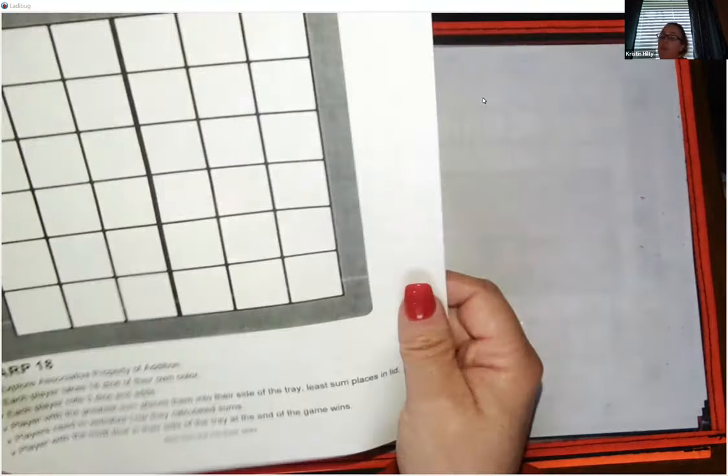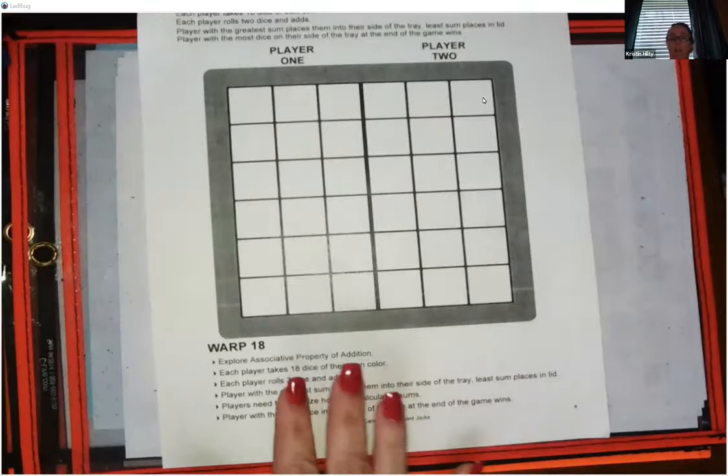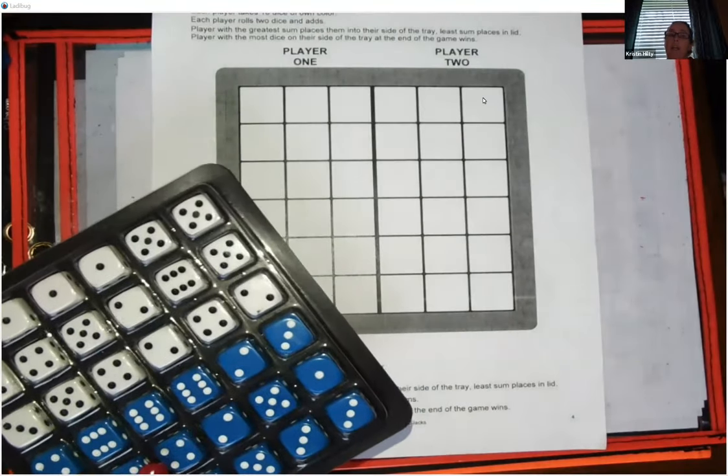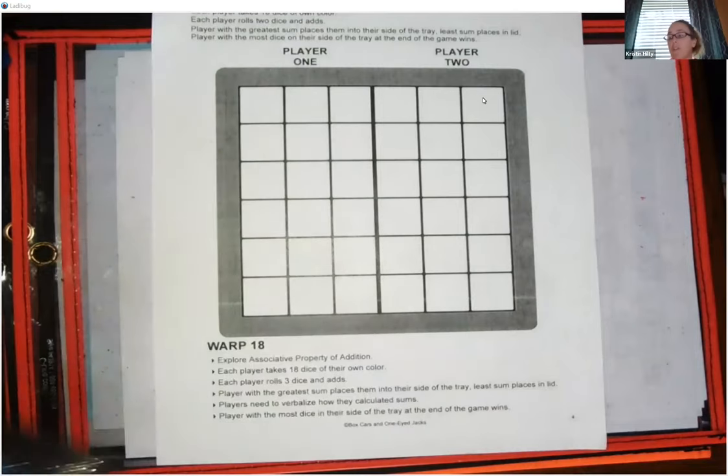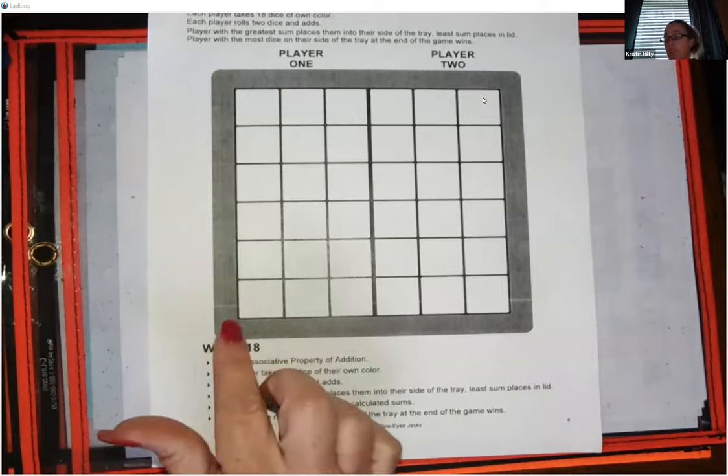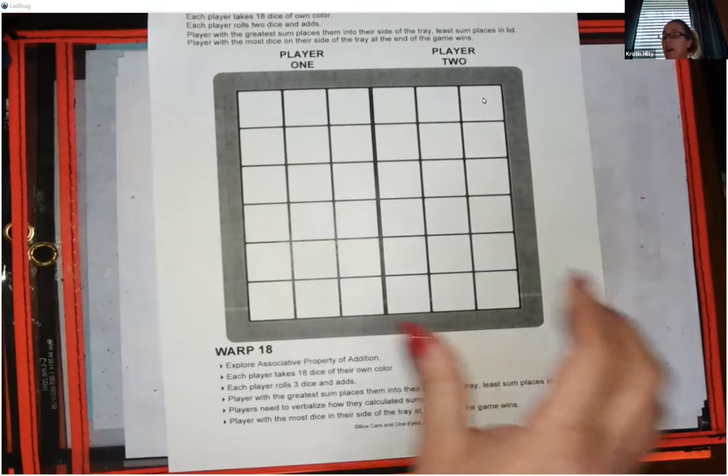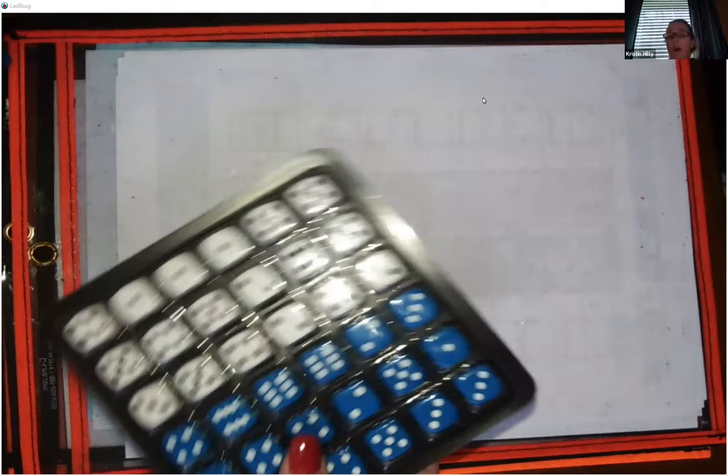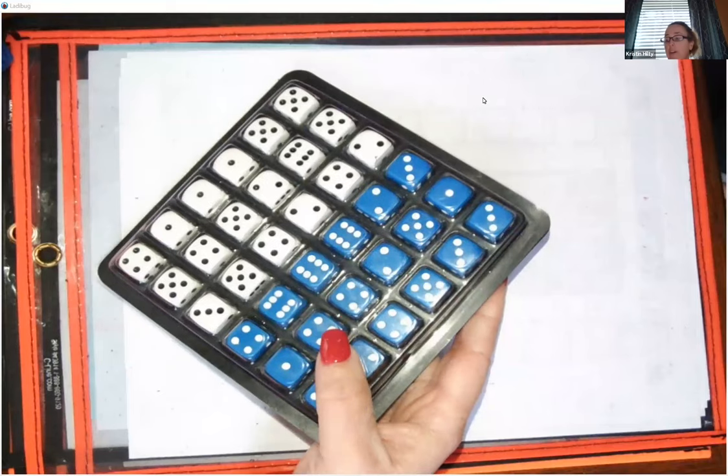the game board for Horse Race that you will be able to download. So if you don't actually have the dice tray, once Megan and I show you how to play the game, you'll see that you can use just the game board, and you'll be able to use this at your house with just regular dice. So stay tuned for that. I'll show you that after we demonstrate how to play if you don't have one of these trays at your house.